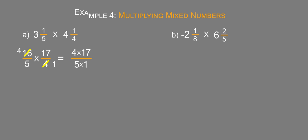Four times 17, that's going to be four times 10 is 40, and then four times seven is 28, so that's going to be 68. And that's still over five times one is five. Now we have 68/5. We'll go ahead and write that out as a division problem.